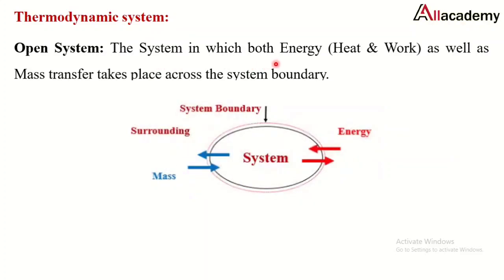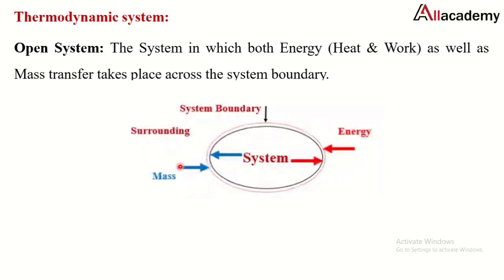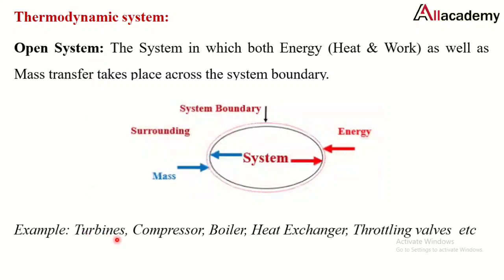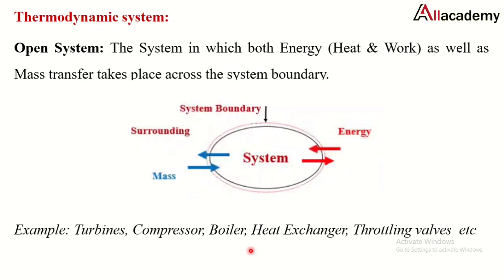An open system is one in which both energy and mass transfer take place across the system boundary. As seen in the animation, both energy and mass cross the system boundary, either entering or leaving. Examples of open systems include turbines, compressors, boilers, heat exchangers, and throttling valves.